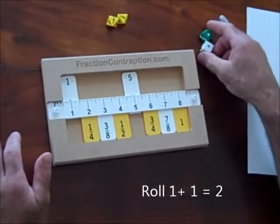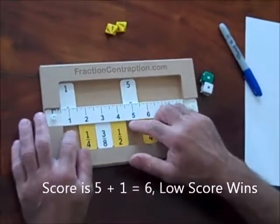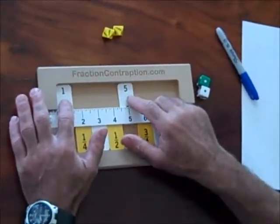I roll again and I have a 2. There is no way I can move a 2. I am left with a 6. That is my score.